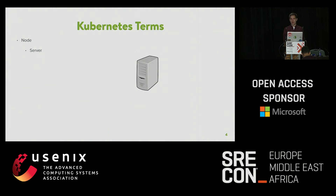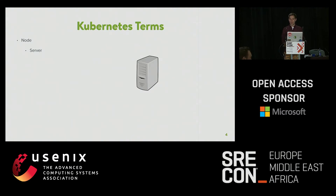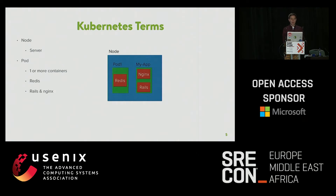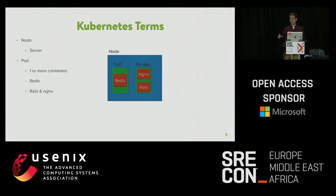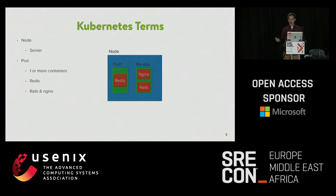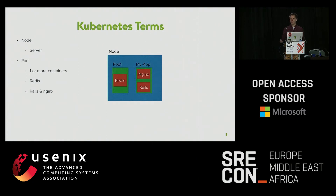A couple of quick terms. Kubernetes has what they call a node — best thought of as a server or virtual server. Then there is the pod: one or more containers deployed together. The blue box here is your node, the green would be your pod, and the red is your actual container. You might deploy Redis by itself, or deploy your big Rails app along with Nginx so you can do SSL termination smoothly.